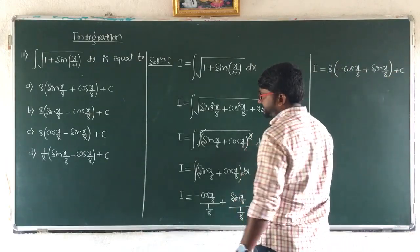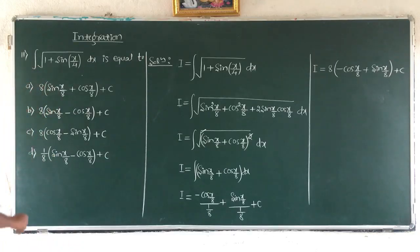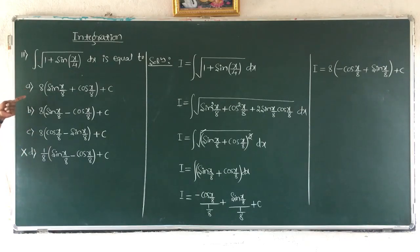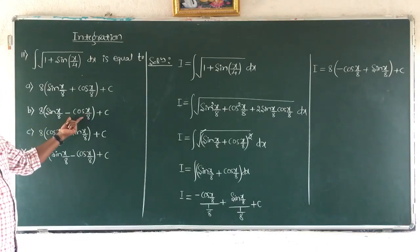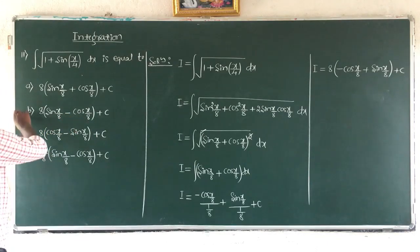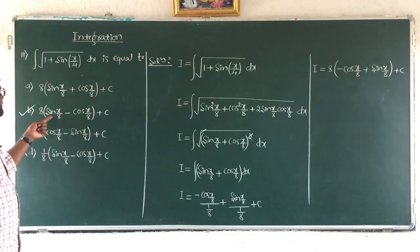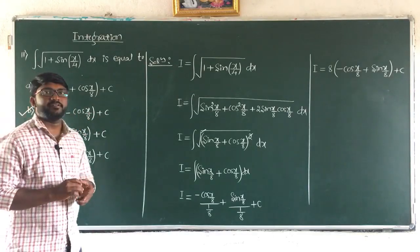Here I can take 8 common, so writing it directly: I equals 8 times (minus cos(x/8) plus sin(x/8)) plus c. Searching for the options — it is minus cos(x/8) plus sin(x/8), that means the answer is option B. This is all about the 11th problem.